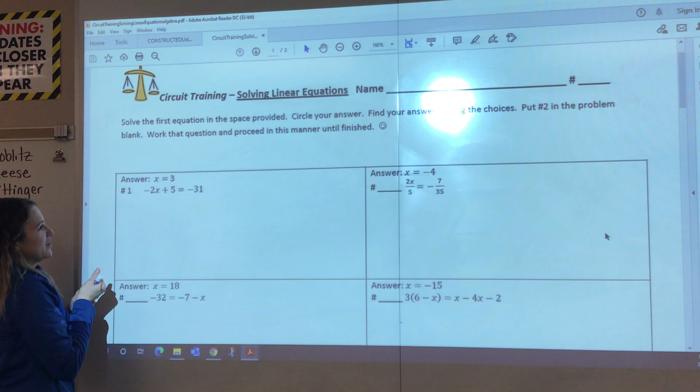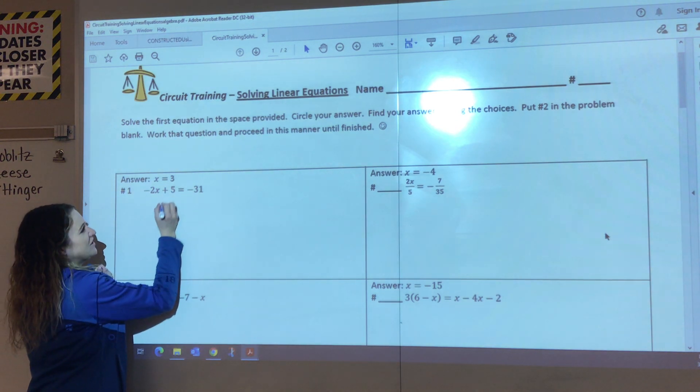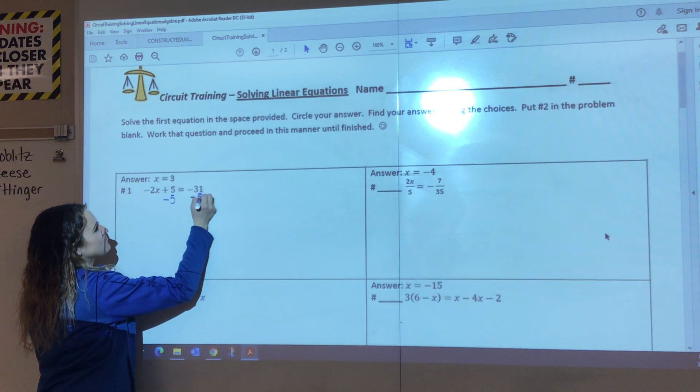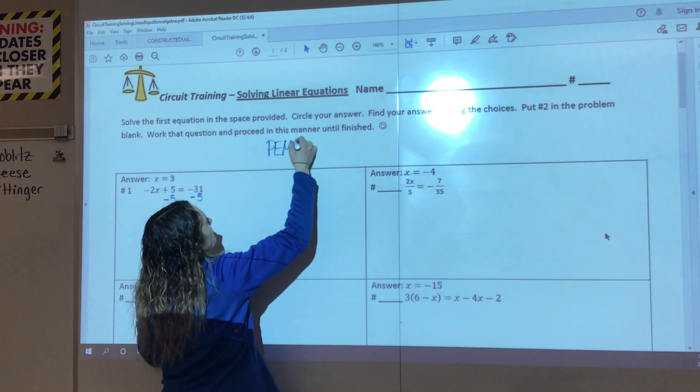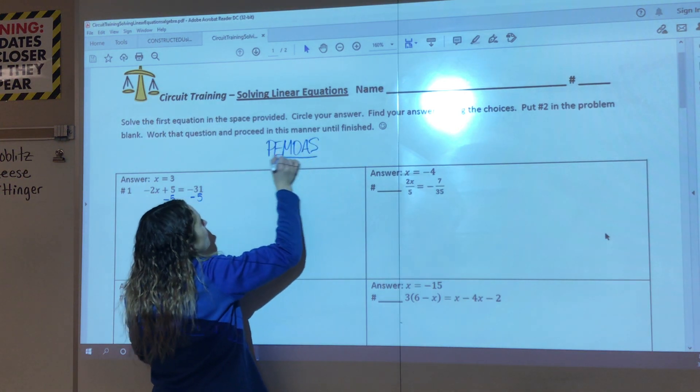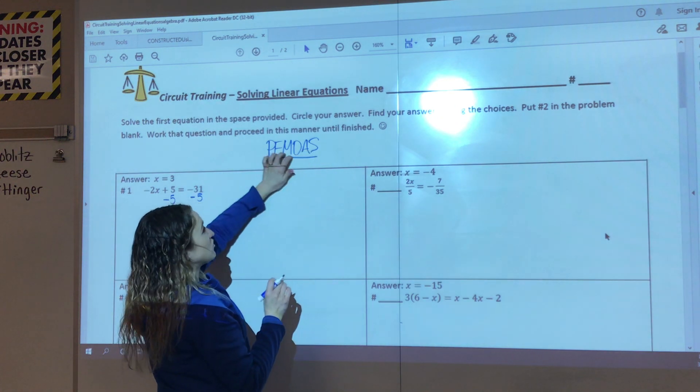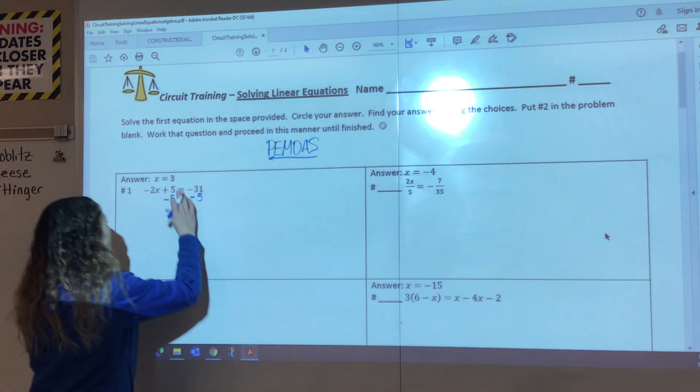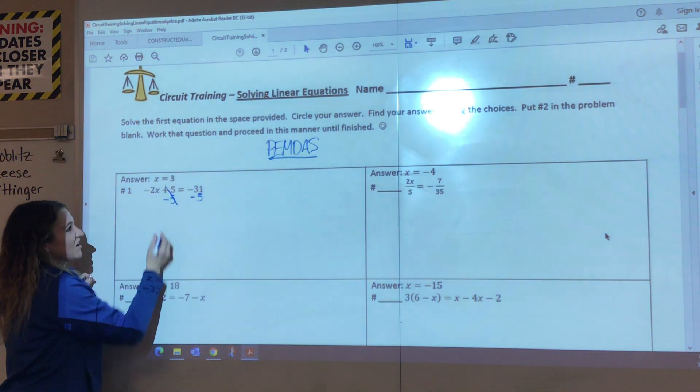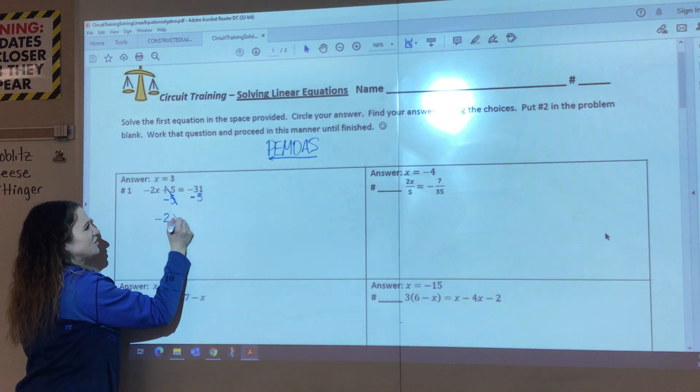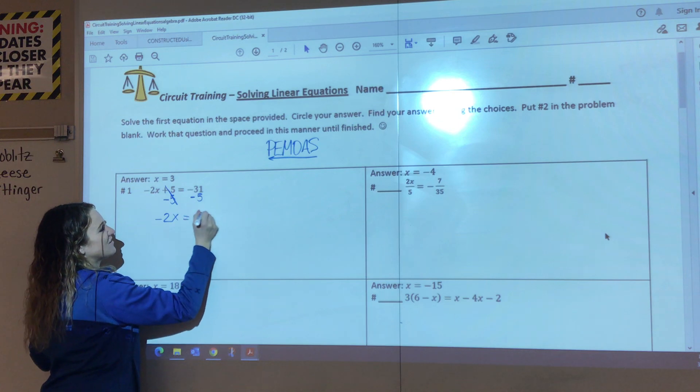So I need to solve this equation. In order to solve this equation, I know I need to get rid of my 5 first. Since this is being added, I'm going to subtract. Remember, whenever we're solving equations, we're using PEMDAS backwards, which means that we need to get rid of any addition and subtraction first, then multiplication and division. So on this side of the equal sign, I have addition right here. I want to get rid of that first. So that's gone. I'm going to bring down my -2x, and then -31 minus 5 would give me -36.